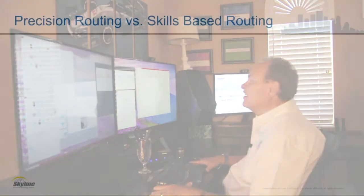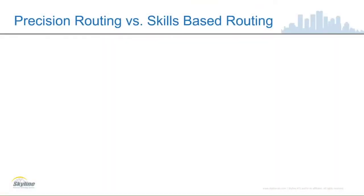Precision routing — some people even call it precision queuing — because it can affect all manners of how we can select an agent in our contact center. Let's get started. I'd like to share some business reasons why you may want to do it, so let's contrast precision routing to skills-based routing.